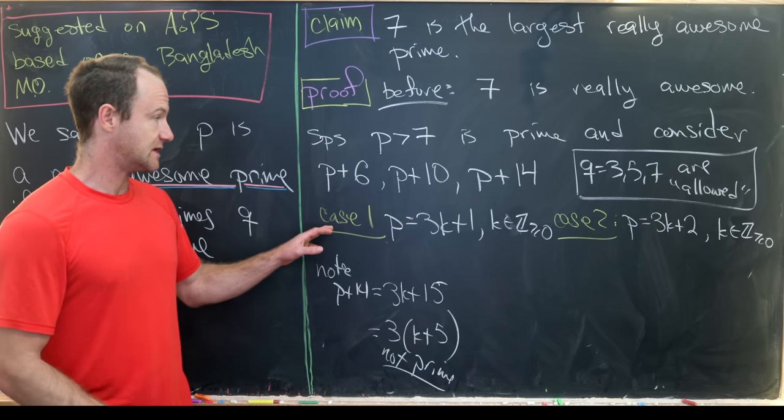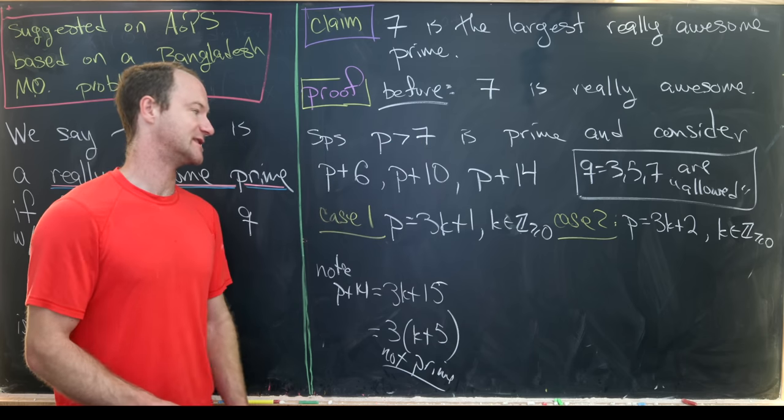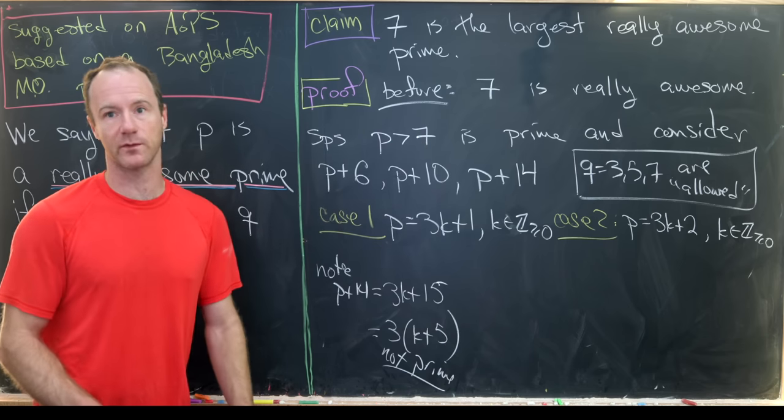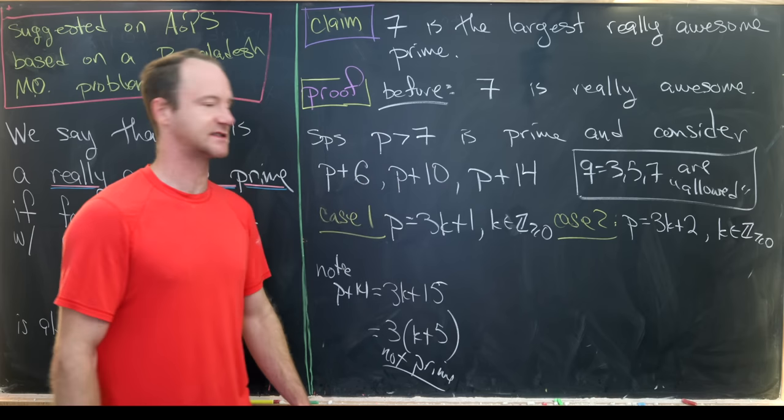So that means that if we have a really awesome prime bigger than 7, then it cannot be of the form 3k plus 1 because we end up with something on this list that's not prime.